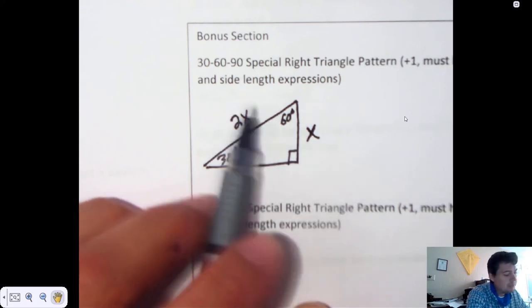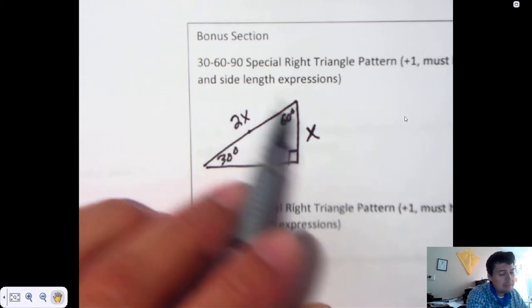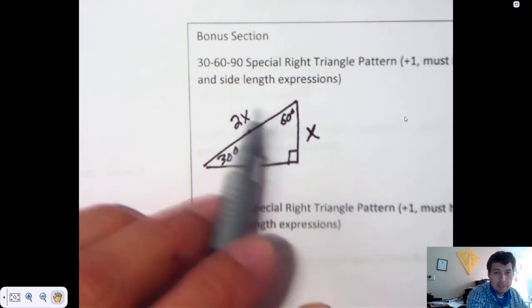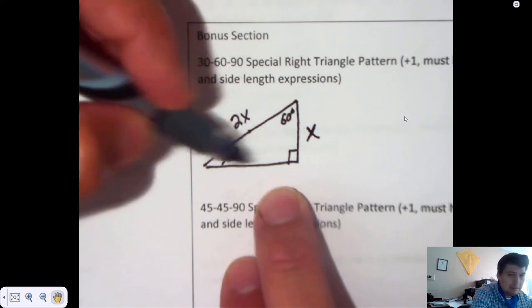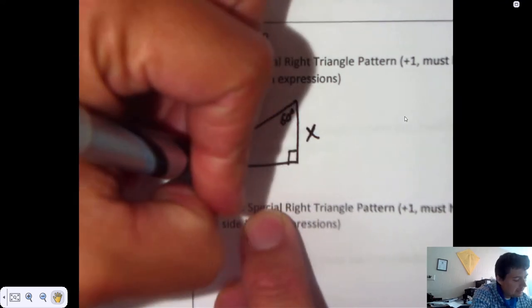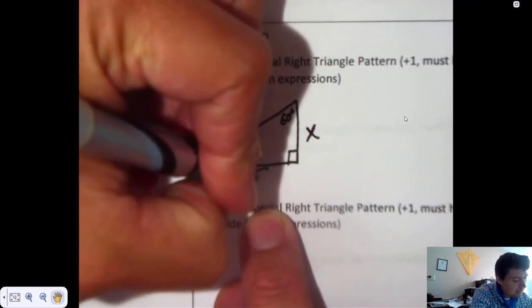Now visually you can't really tell what the long length is, but the long length happens to be x times the square root of 3. That's 30-60-90 special right pattern.